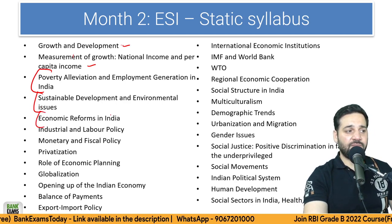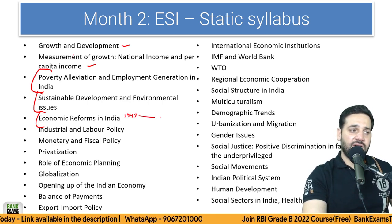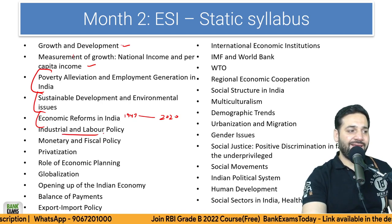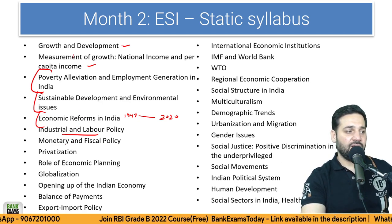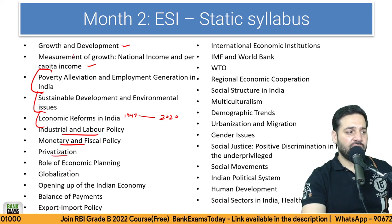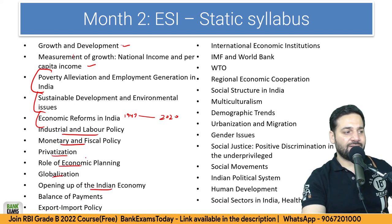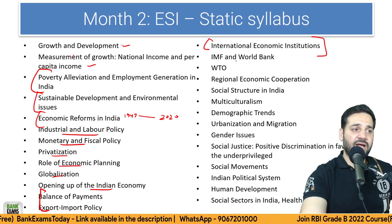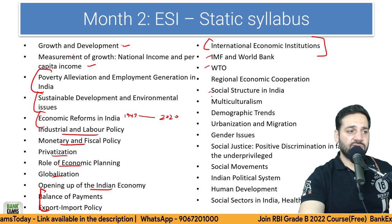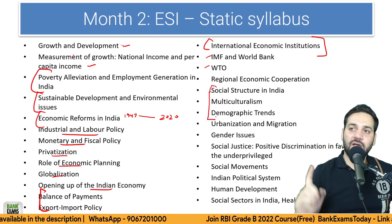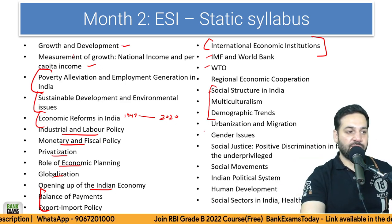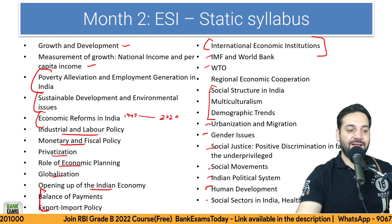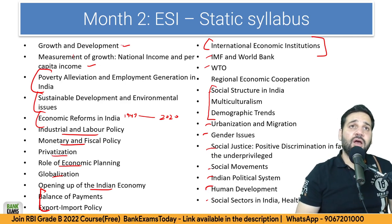For economic reforms in India, start from 1947 up to 2020. Cover liberalization, industrial and labor policy, monetary and fiscal policy, privatization, economic planning, globalization, and the opening up of the Indian economy. Also cover balance of payments, exchange policy, international economic institutions — IMF, WTO — social structure in India, multiculturalism, demographic trends, Census 2011, urbanization, gender issues, social justice, social movements, Indian political system, and human development.